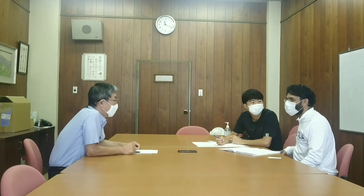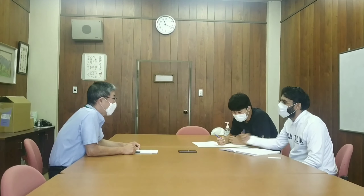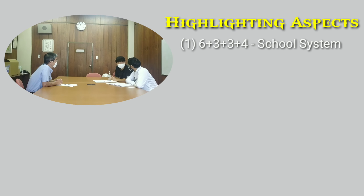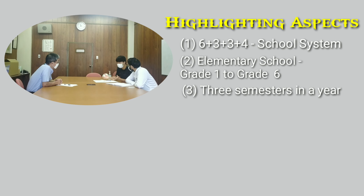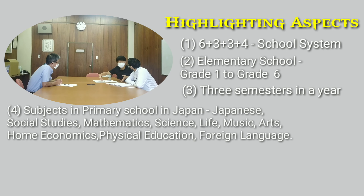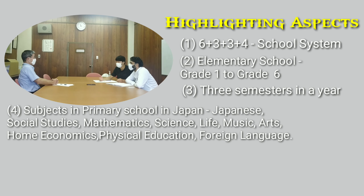To know about the evaluation system of an elementary school in Japan, I visited Kogane Elementary School and took an interview with Mr. Tsukamoto, the Vice-Principal. Japan follows a 6-3-3-4 school system, with primary or elementary education lasting 6 years, Grade 1 to Grade 6. There are 3 semesters per academic year. Subjects offered include Japanese, Social Science, Mathematics, Science, Life, Music, Arts, Home Economics, PE and Foreign Language, with subject allotment varying from grade to grade.